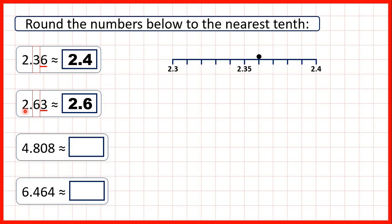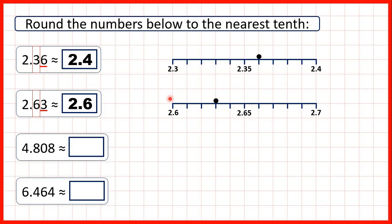The two in the ones stays the same as well. On a number line, we can see that 2.63 is between the tenths 2.6 and 2.7, but because it's closer to 2.6, that's what it rounds to.